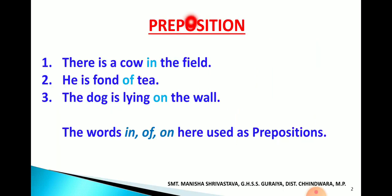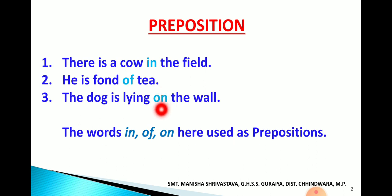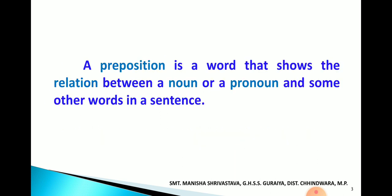See preposition. We have some sentences on the screen. There is a cow in the field. He is fond of tea. The dog is lying on the wall. In these sentences we are seeing that the words 'in', 'of', 'on' — these three words are marked with different colors and are used as prepositions. Now let's understand what is a preposition. A preposition is a word that shows the relation between a noun or a pronoun and some other words in a sentence.